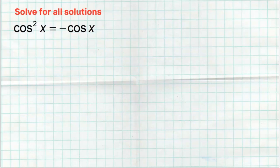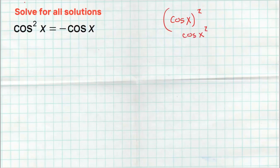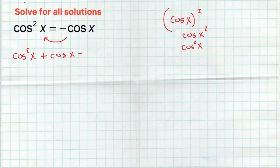Let's take a look at the next problem. So I have cosine squared equals negative cosine of x. I want to remind you that cosine squared means cosine of x all squared — that's why we put the little square right there, emphasizing cosine of x all squared. Now I want to factor, but I can't factor until I have a zero on one side. So let's add the cosine to the other side, giving us cosine squared of x plus cosine of x equals zero.